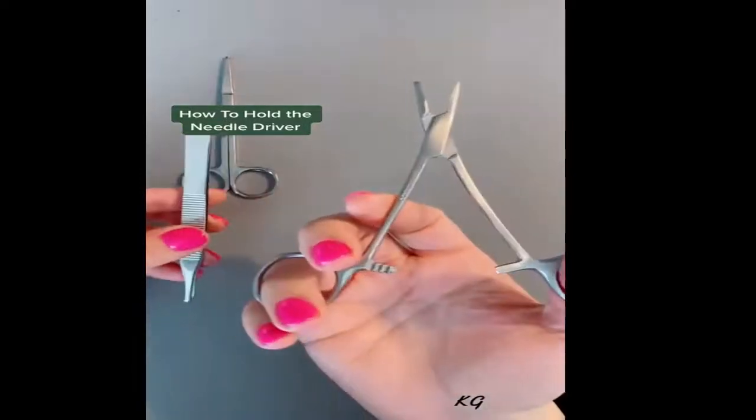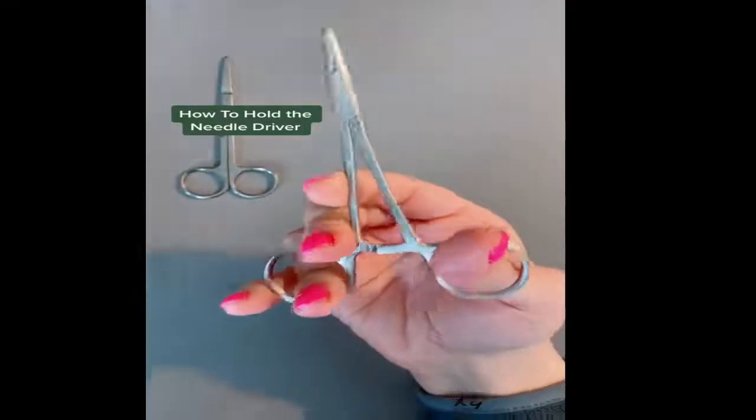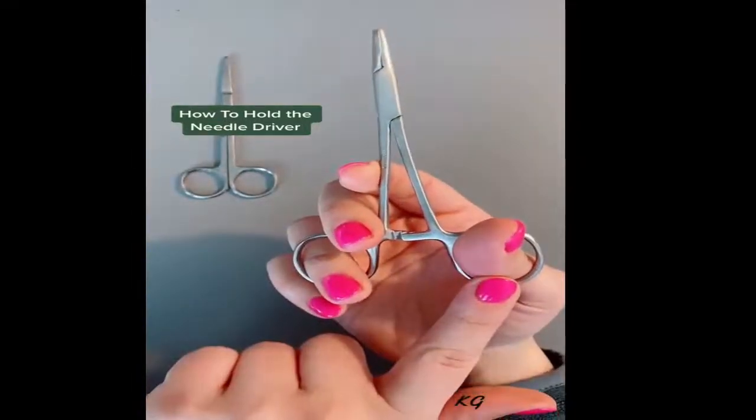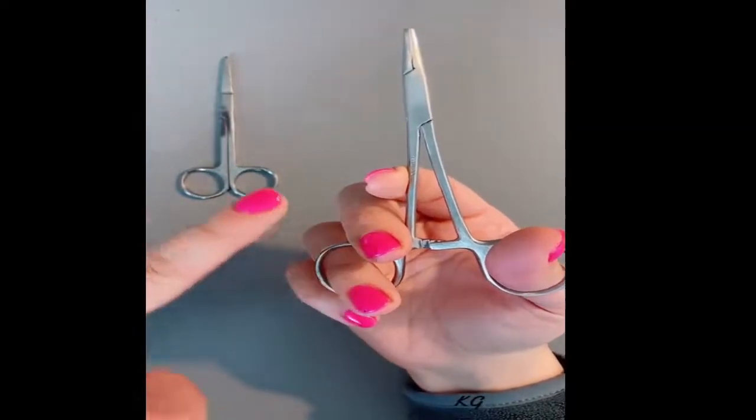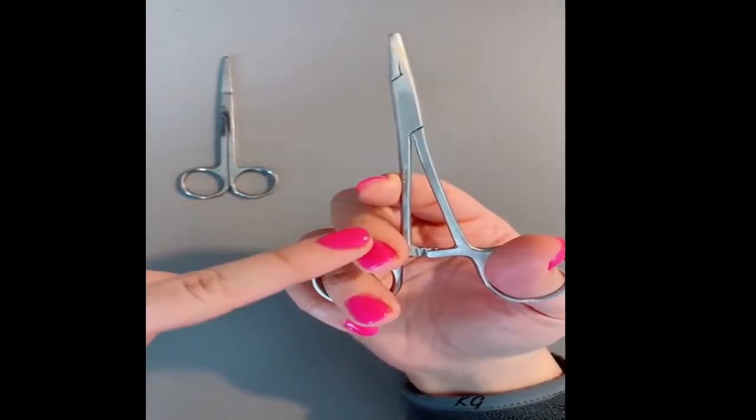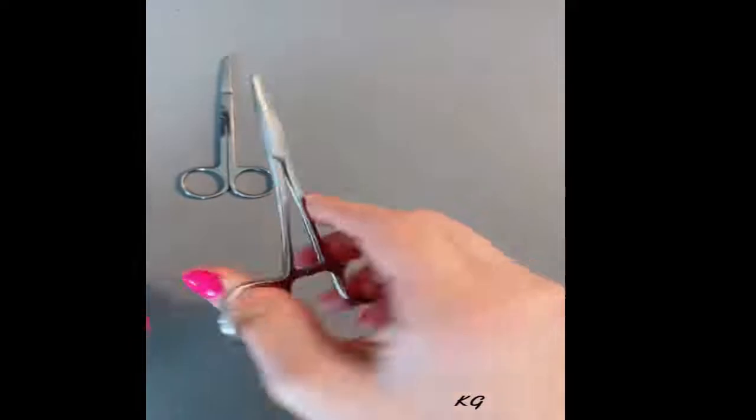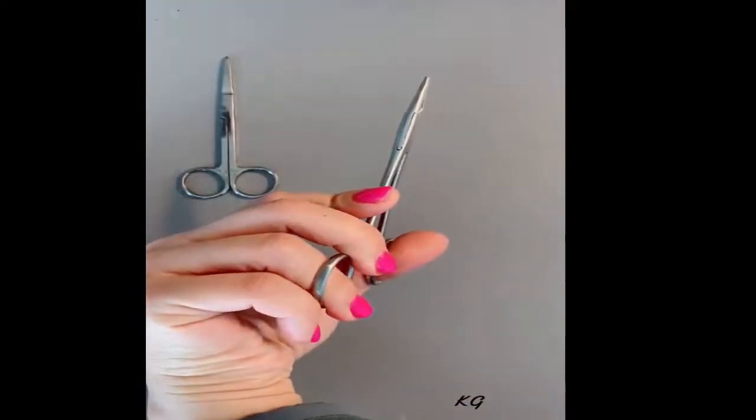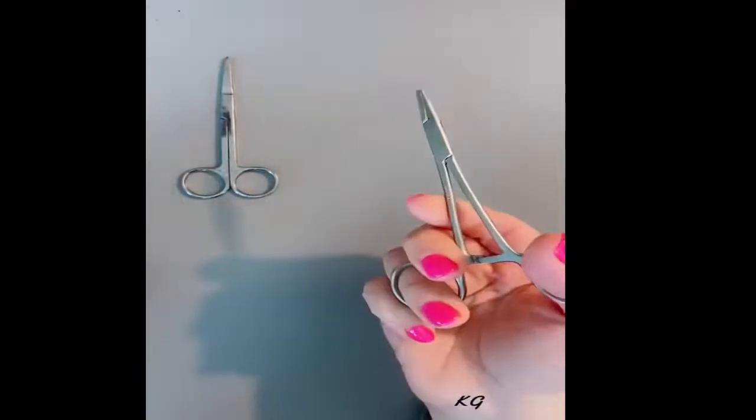Okay y'all, let's talk about how to properly hold our instruments. Let's start with the needle driver on the right hand side. The thumb goes through the first hole, the fourth finger goes through the second hole, index finger for support, third over fifth under. This is what it looks like on the other side. This is going to give us maximum support to flick our wrists as needed for suturing.